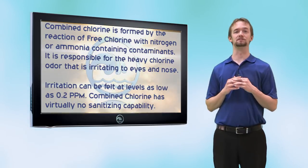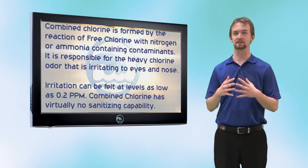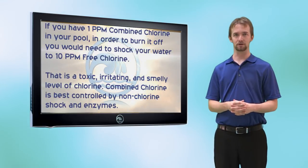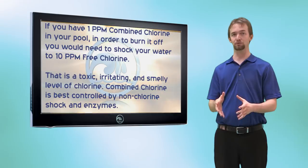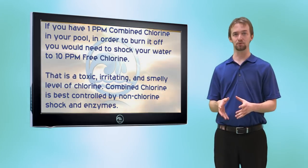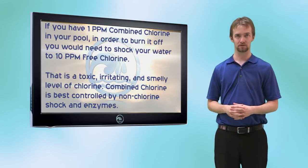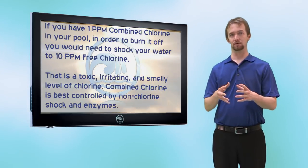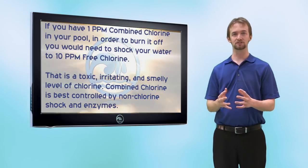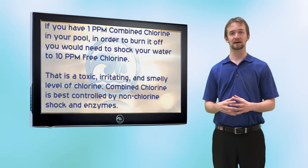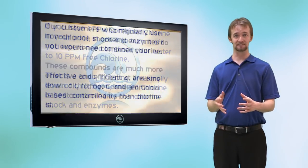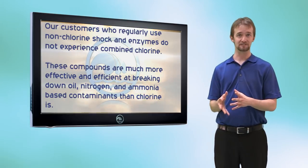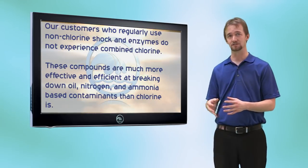Chloramines are chlorine molecules attached to a nitrogen or ammonia-based contaminant that just won't go away — they hang around in the pool and become smelly and irritating. It's very common in pools that use strictly chlorine for disinfecting and oxidizing. For example, if you have 1 ppm combined chlorine, you will have to shock the pool to 10 ppm free chlorine to remove it. Non-chlorine shock like potassium monopersulfate and enzymes can break down ammonia and nitrogen-based contaminants, which is why pools using them typically don't have a problem with chloramines.